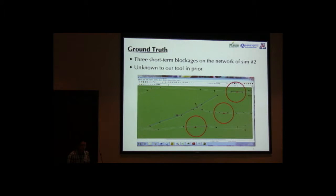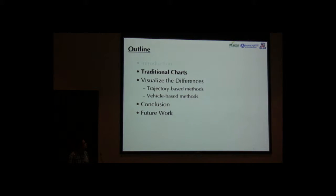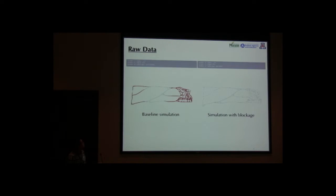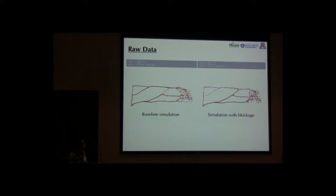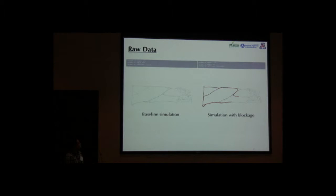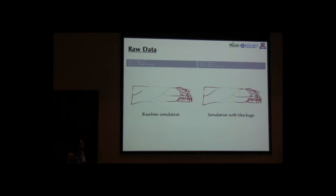First, I'll show the ground truth: we have three short-term blockages on the network in the simulation, and those locations are unknown to our tool. I'll first show some traditional charts — we put the simulation chart for the baseline and the blockage side-by-side. It's very hard to see what the difference is between these two simulations. Maybe the only thing you can notice is that the simulation with blockage takes longer time for all vehicles to reach their destination.